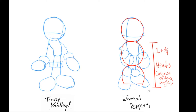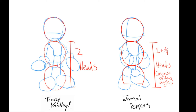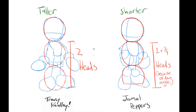The head height is about one plus three-fourths of a head because of the angle, and Tracy Yardley's is about two extra heads. That's how you can figure out the size you want to draw for Tracy Yardley's characters — make sure they're about three heads high. Tracy's is a lot taller than Jamal Pepper's, and I think that's one of the many reasons why everyone likes Tracy Yardley's style so much more.